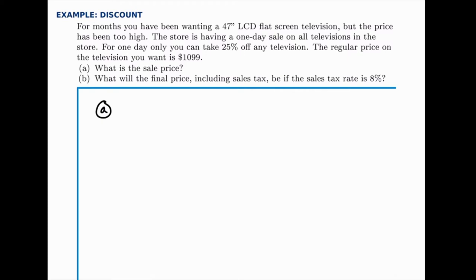or instead we could think about cutting off 25% will leave 75% behind, which means that the sale price will be 75% of what it was before. That lets us do it in one step rather than two steps.